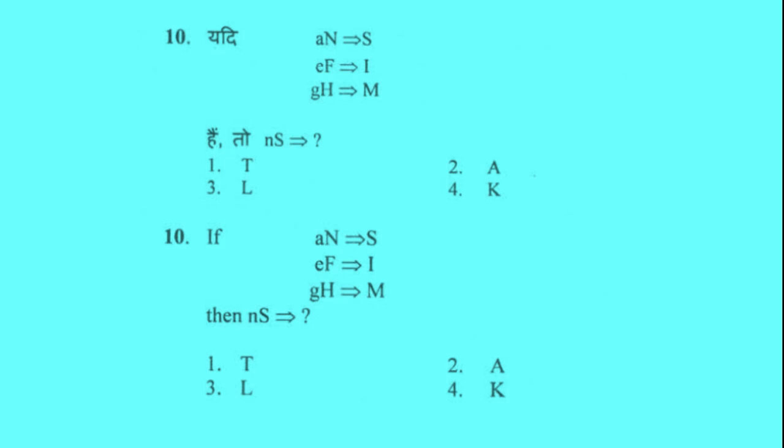Problem 10: There are some codes and their conclusions. Such as, small a capital N implies to capital S. Small e capital F implies to capital I. Small g capital H implies to capital M. Then, small n capital S implies to. We would have to select the correct answer from the given 4 options. Option 1 capital T. Option 2 capital A. Option 3 capital L. Option 4 capital K.